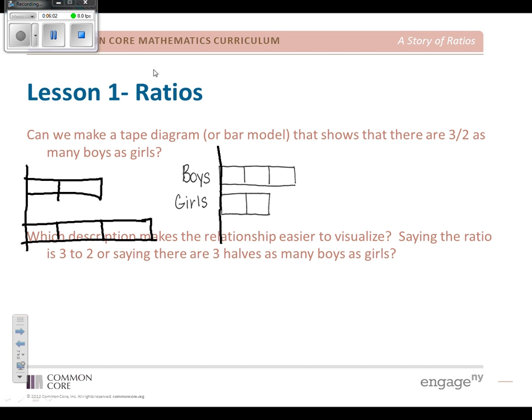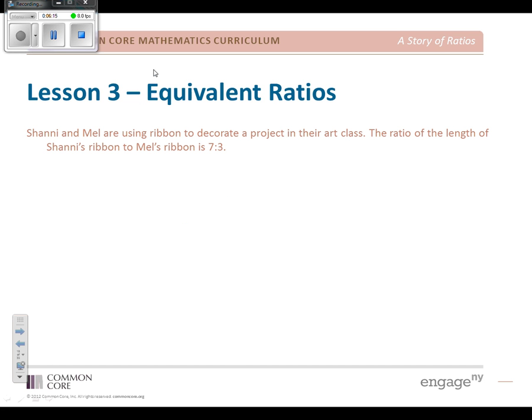If we have a tape diagram like this, they can easily share your information, I believe. But the question might be, is it more clear saying there are three halves as many boys as girls? Let the kids decide what they prefer. And presumably, there's no right or wrong answer, though I do have strong preference.